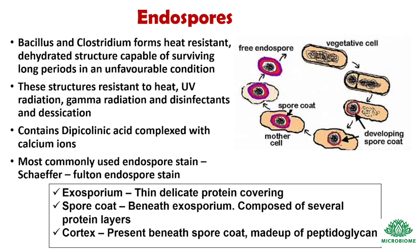Next, endospores. Bacillus and Clostridium form heat-resistant, dehydrated structures capable of surviving long periods in unfavorable conditions. These structures are resistant to heat, UV radiation, gamma radiation, disinfectants, and desiccation. They contain dipicolinic acid complexed with calcium ions. The most commonly used endospore stain is the Schaeffer-Fulton endospore stain.